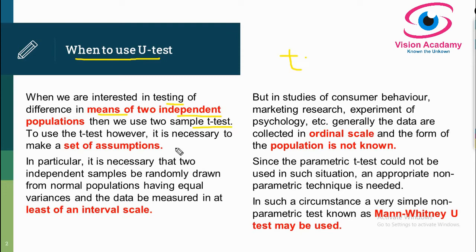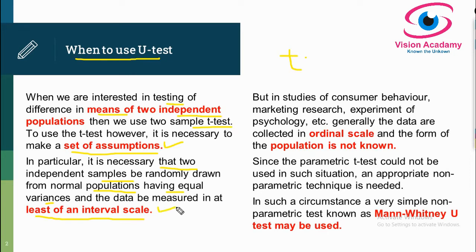To use the t-test, a set of necessary assumptions need to be fulfilled. It is necessary that two independent samples be drawn from a normal population having equal variance, and the data must be measured at least on an interval scale. When these assumptions are met, we can apply the t-test for two independent populations.